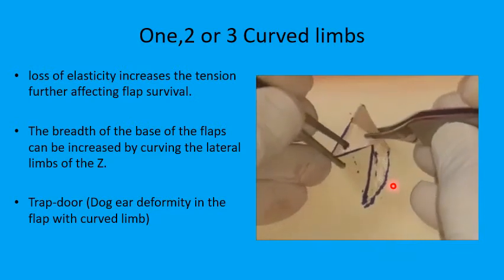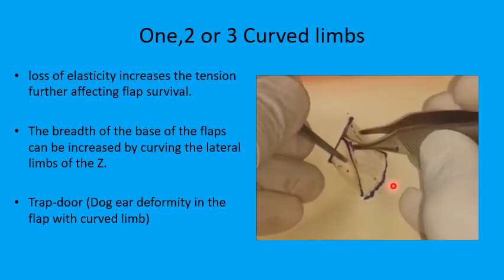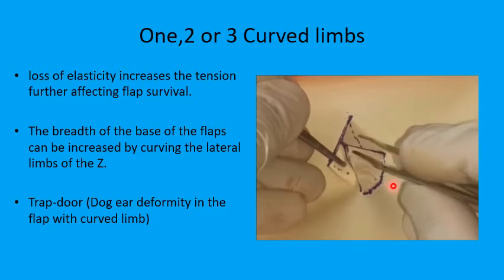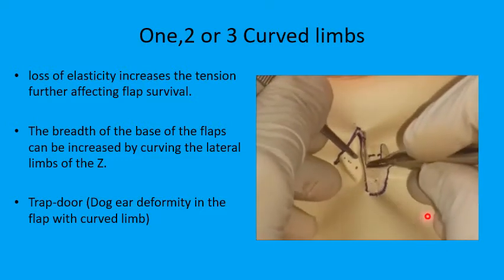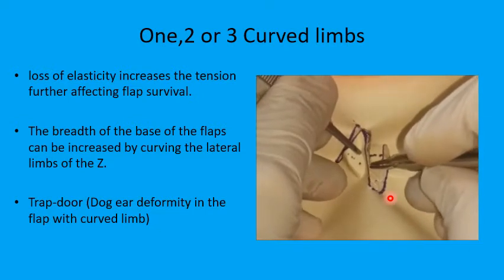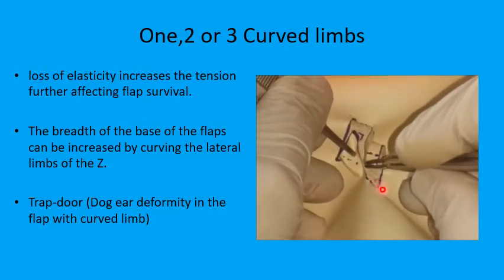Once the two flaps are created then they can be transposed, and you'll have some difficulty in placing the flap with the curvilinear line in position because of the excess tissues, and that would create a trap door or a dog ear deformity that has to be addressed.